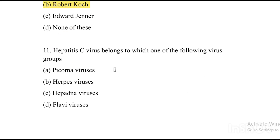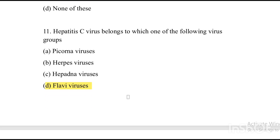Next question: Hepatitis C virus belongs to which one of the following virus groups? Option A: picornaviruses. Option B: herpesviruses. Option C: arenaviruses. Option D: flaviviruses. The answer is Option D, flaviviruses.